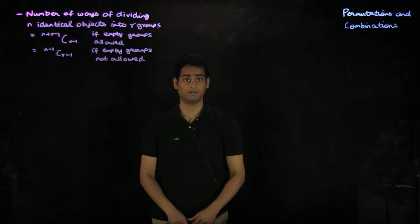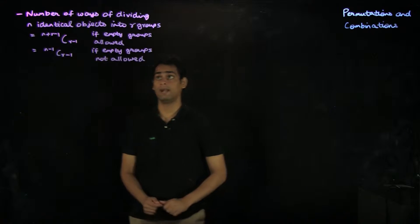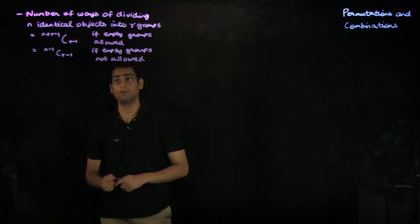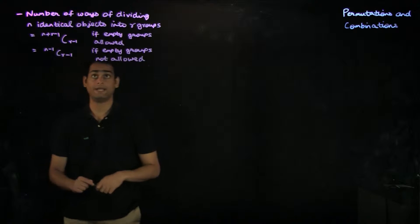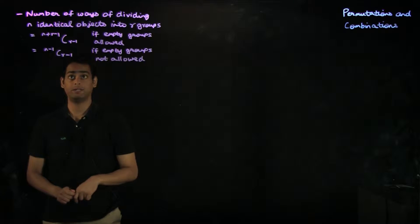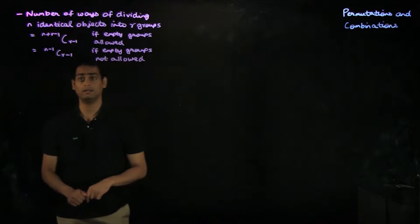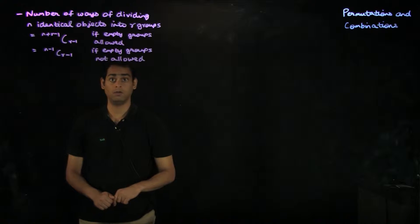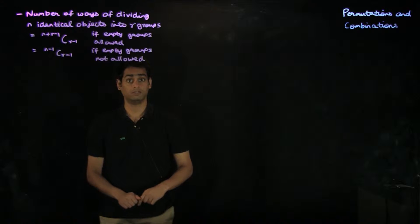Hello, and welcome to yet another lecture on permutations and combinations. In our previous lecture, we looked at the number of ways of dividing identical objects into a set of groups, and we showed that the number of ways of dividing n identical objects into r groups is given by n plus r minus 1, choose r minus 1, if empty groups are allowed, and n minus 1, choose r minus 1, if empty groups are not allowed. In this lecture, we will look at some example applications of these results.